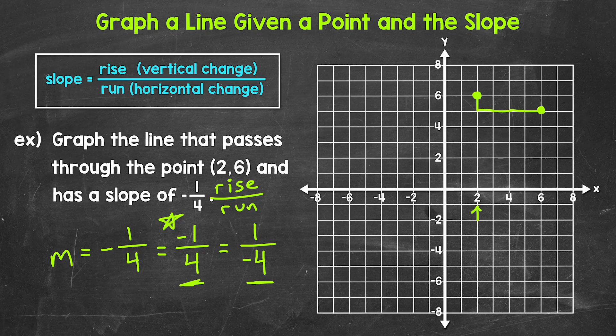Now at this point, we can draw a line through those 2 points. And we have our line graphed. And we would be correct. But let's do a third point here using 1 over negative 4. So again, we're going from our original point of (2, 6).